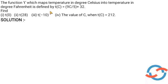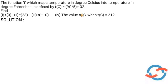We will discuss the function T, which converts temperature in degree Celsius to degree Fahrenheit. The function is defined by T of C equal to 9C by 5 plus 32.